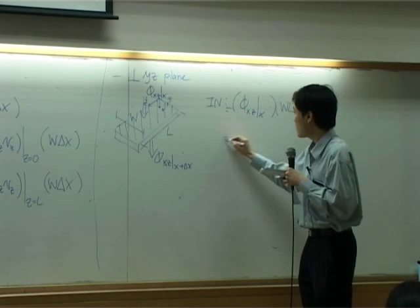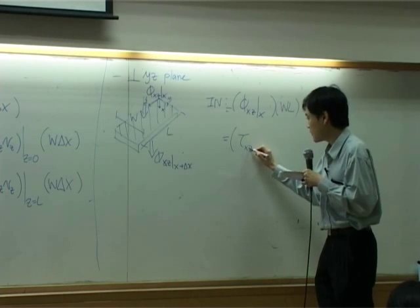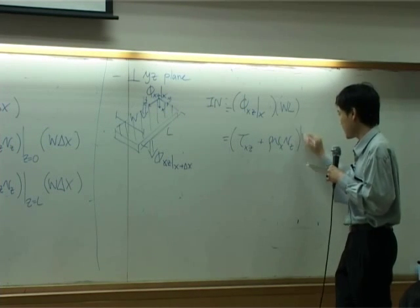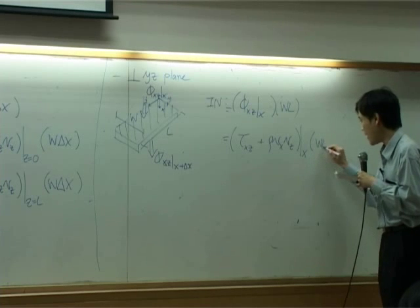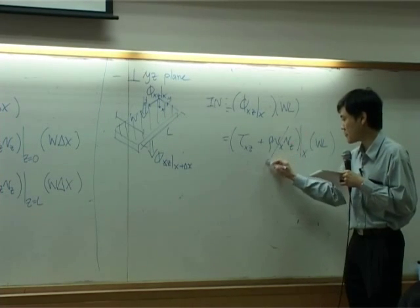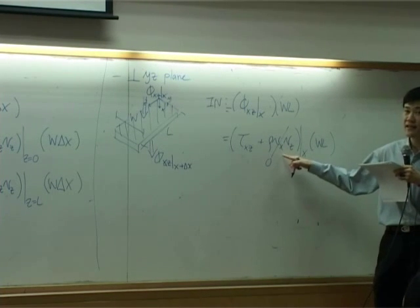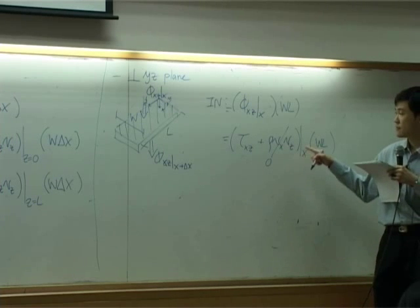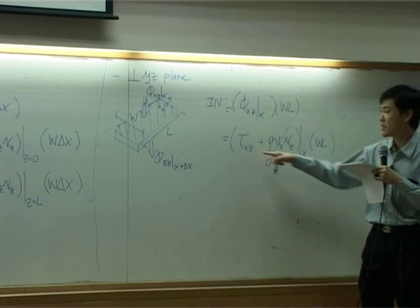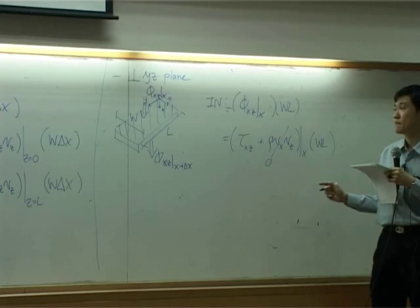And you know that VXZ is consisting of two terms: tau XZ plus rho VX VZ at X, times WL. And VX is already zero, so we can drop this term. In other words, there is no convective flux in XZ direction. But this one is not zero, so we have to keep this one.